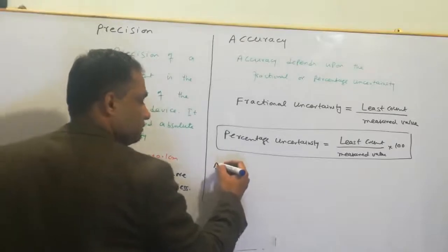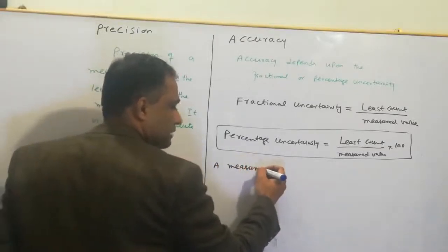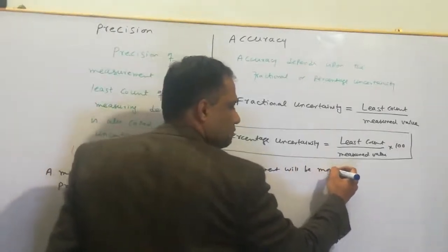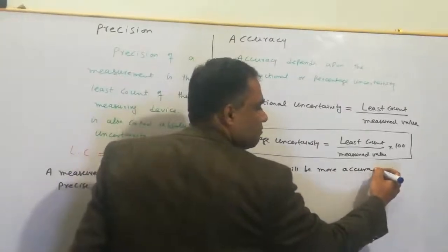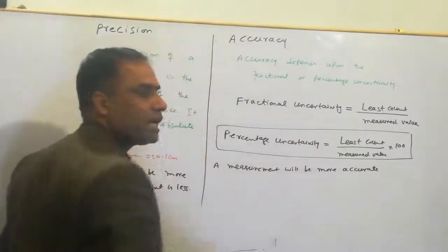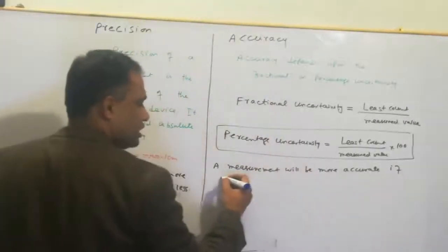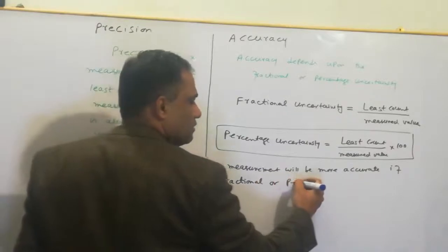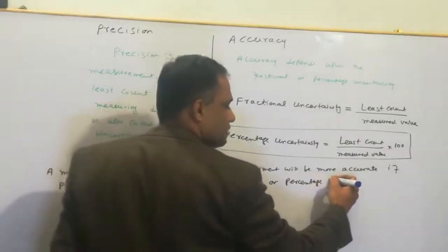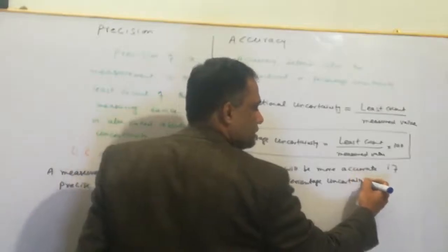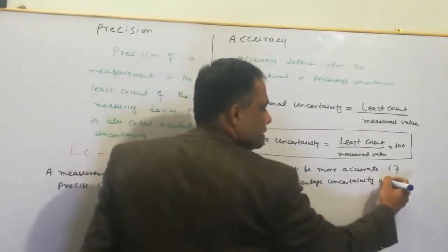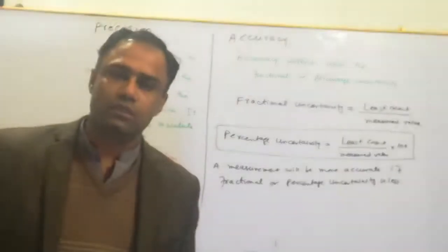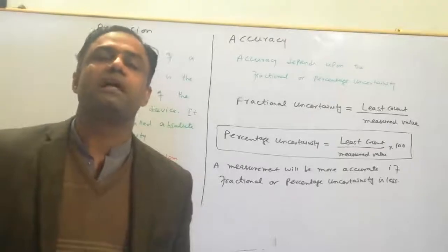A measurement will be more accurate if its fractional or percentage uncertainty is less. The smaller the percentage uncertainty, the more accurate the measurement.